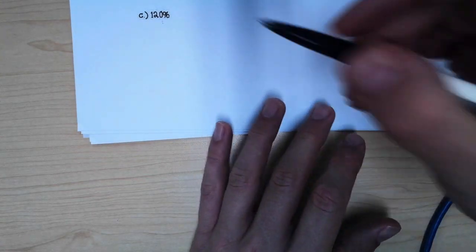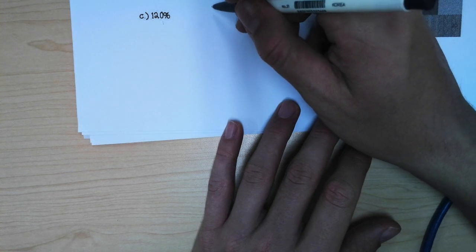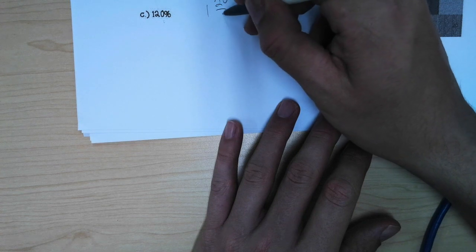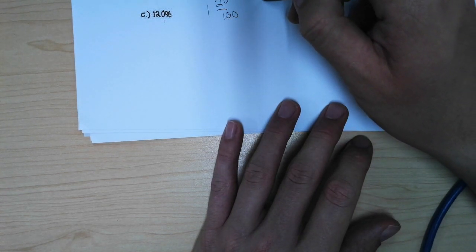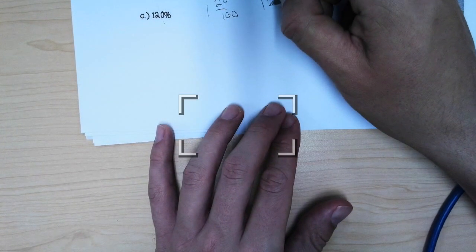The last one, we have 120 percent. Remember, a percent is per 100. So we have one and twenty out of a hundred. One and twenty out of a hundred is equivalent to one and one over five.